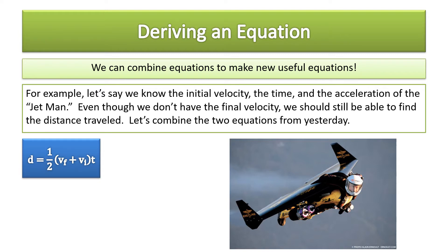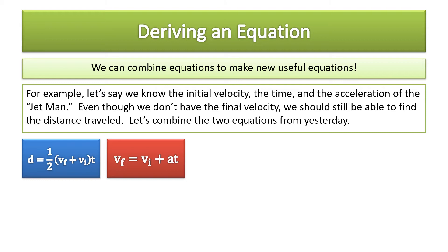d equals one half (vf plus vi) times t—the secret formula that's not given to you but you could write it on your reference table—and the acceleration formula rearranged: vf equals vi plus at. If we wanted to get rid of vf, all we have to do is substitute in what we know vf is equal to. So if vf equals that, let's plug it in, and then instead of a vf term we'll have this, which has no vf in it. So that's kind of the game plan.